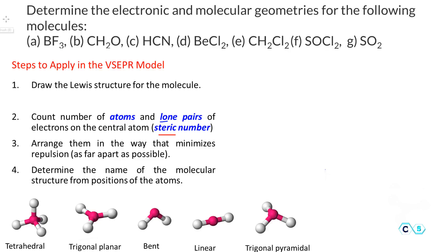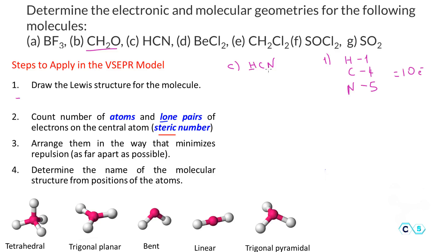Molecule C is HCN, hydrocyanic acid. Valence electrons: H has 1, C has 4, N has 5, totaling 10 electrons. Hydrogen goes on the terminal side, and nitrogen is more electronegative than carbon so it also goes on the side. Carbon, with higher bonding capacity needing 4 bonds for an octet versus nitrogen's 3 bonds, goes in the middle: H–C–N.